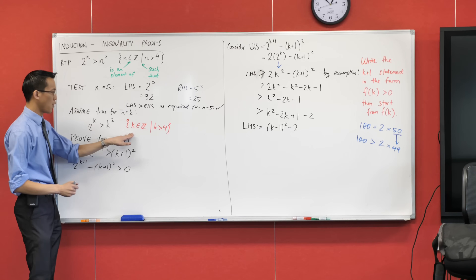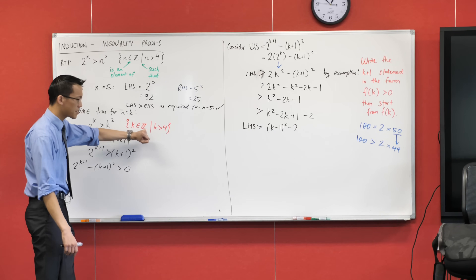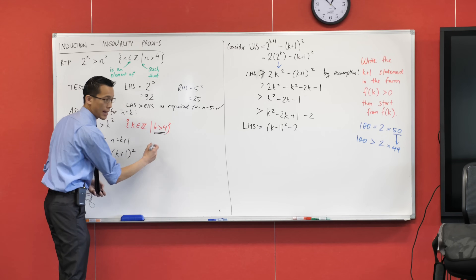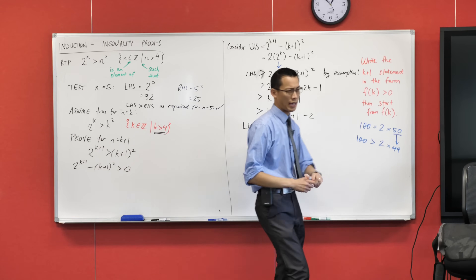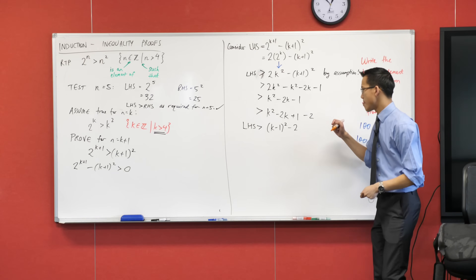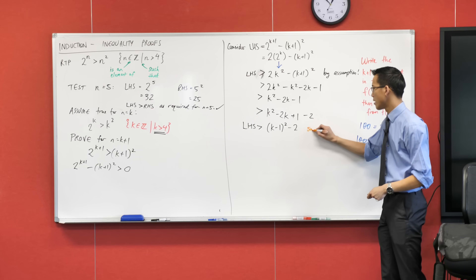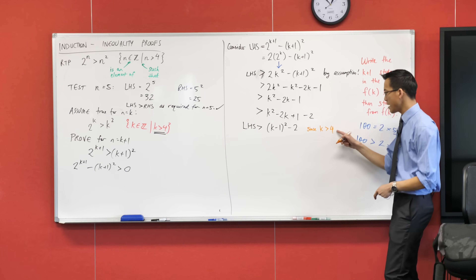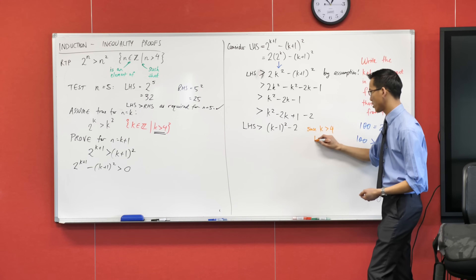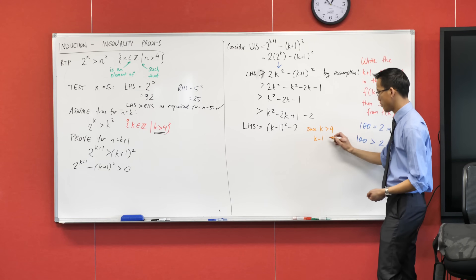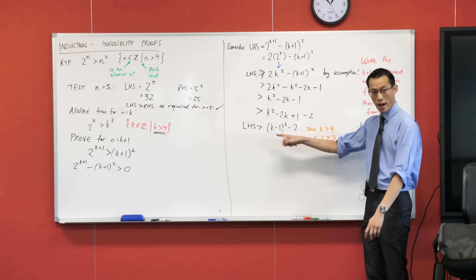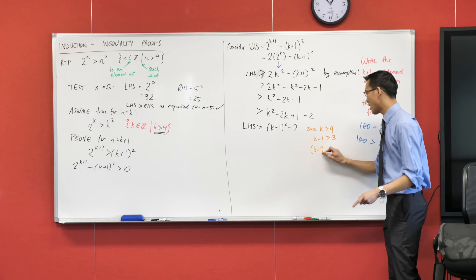Now remember I highlighted before — this characteristic of k is very important, and I'm going to use it right now. Since I know that k is not just any number, k has to be greater than 4. For example, I don't have a k just by itself; I've actually got k minus 1 in there. So if I subtract one from both sides, I'm getting 3. Now I actually don't just have k minus 1 by itself — it's been squared.